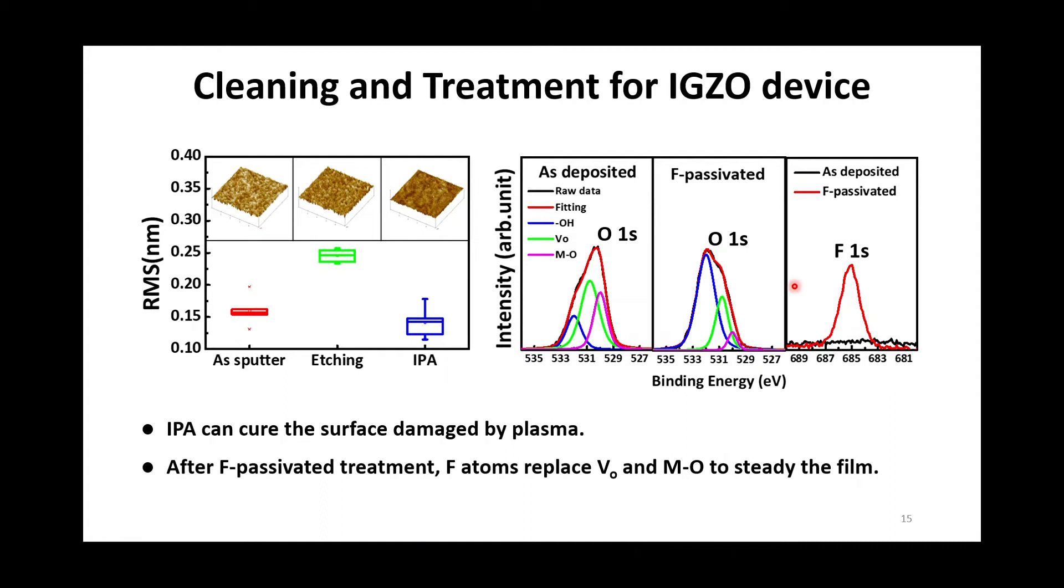On the other hand, oxygen vacancy bothers the IGZO stability in the fabrication process. In the previous studies, fluorine-based doping can avoid the hydrogen influence during the CVD process. Consequently, we adopted fluorine-based gas to define source and drain electrode and treat the IGZO surface in the meantime.